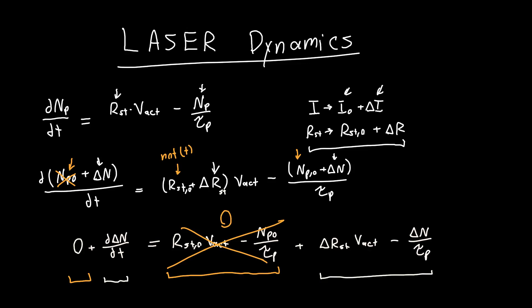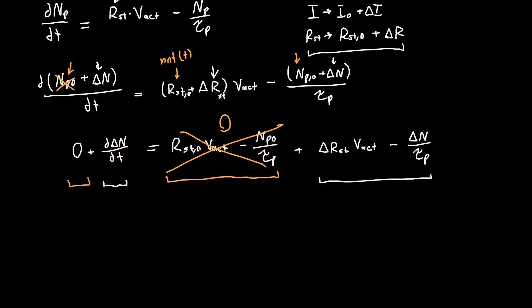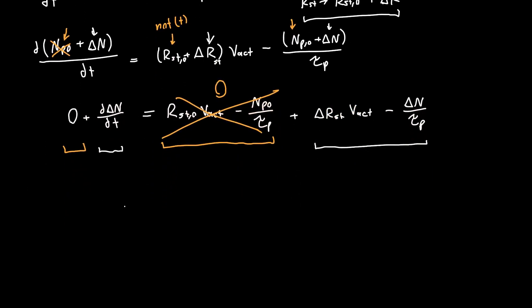So we're left with our differential equation just being the rate of change of the small-signal change in photons, d(delta_NP)/dt. This is simply equal to our small-signal change in stimulated emission minus our small-signal change in photons divided by our photon lifetime tau_P. Now all we need to do is figure out this delta_R_stimulated term.